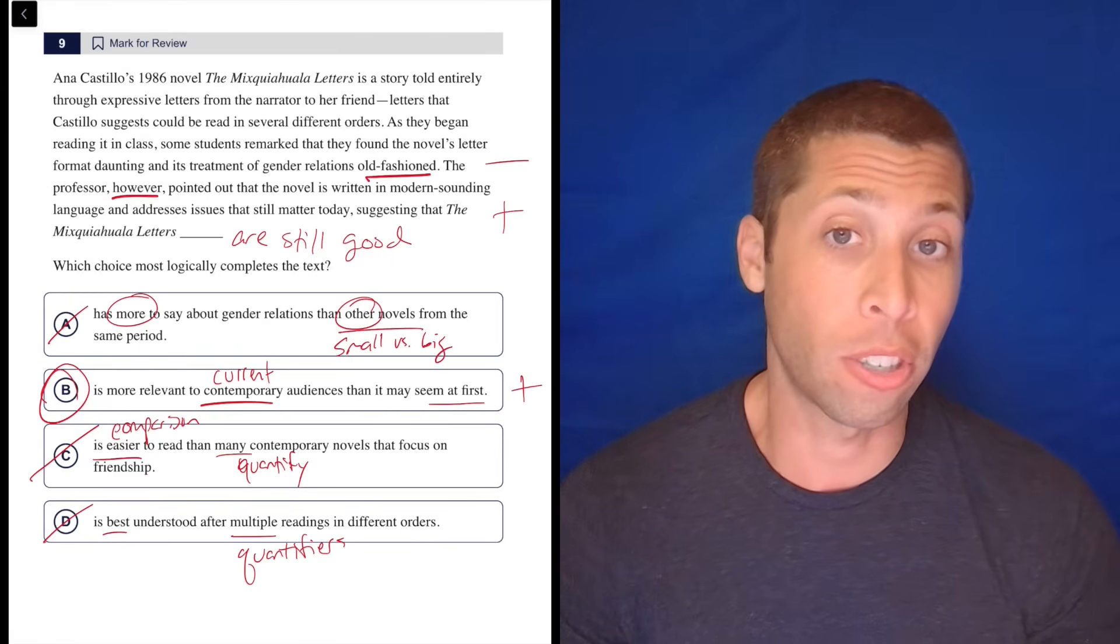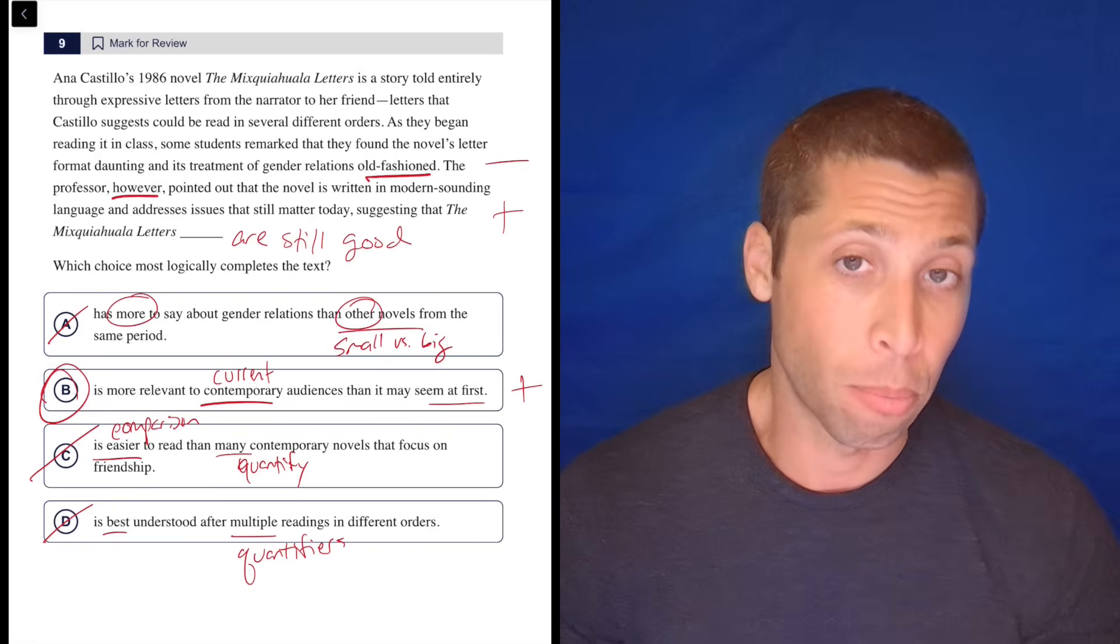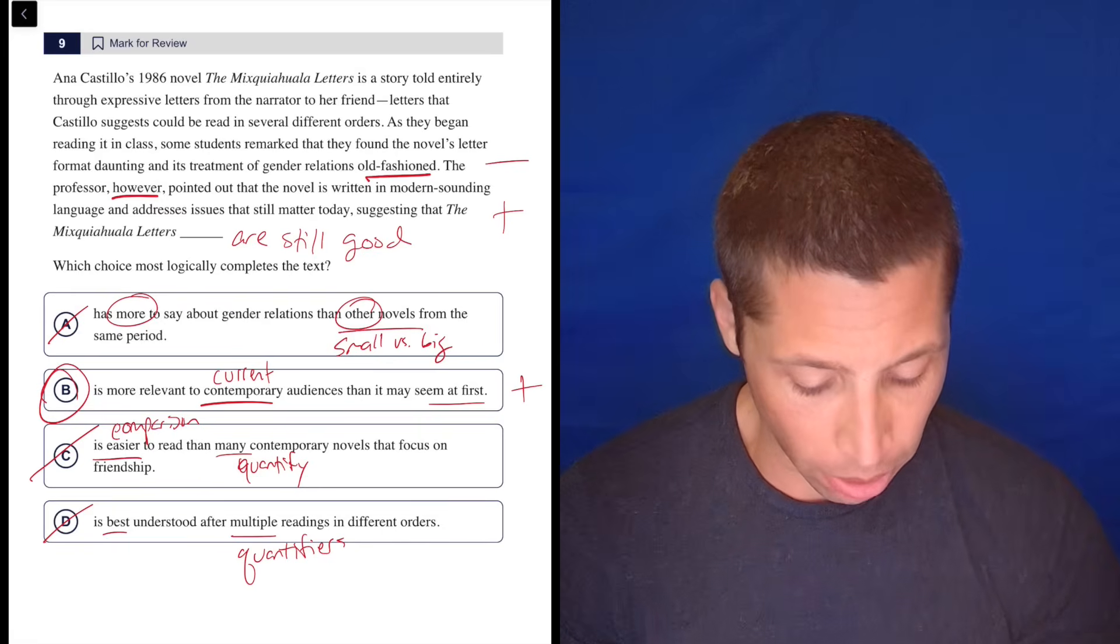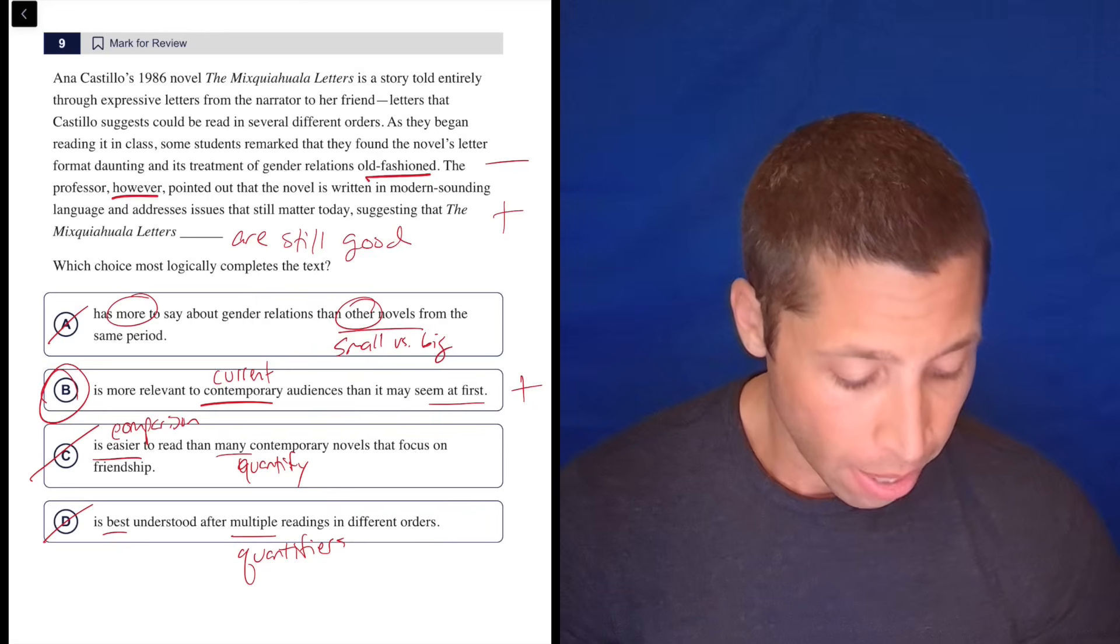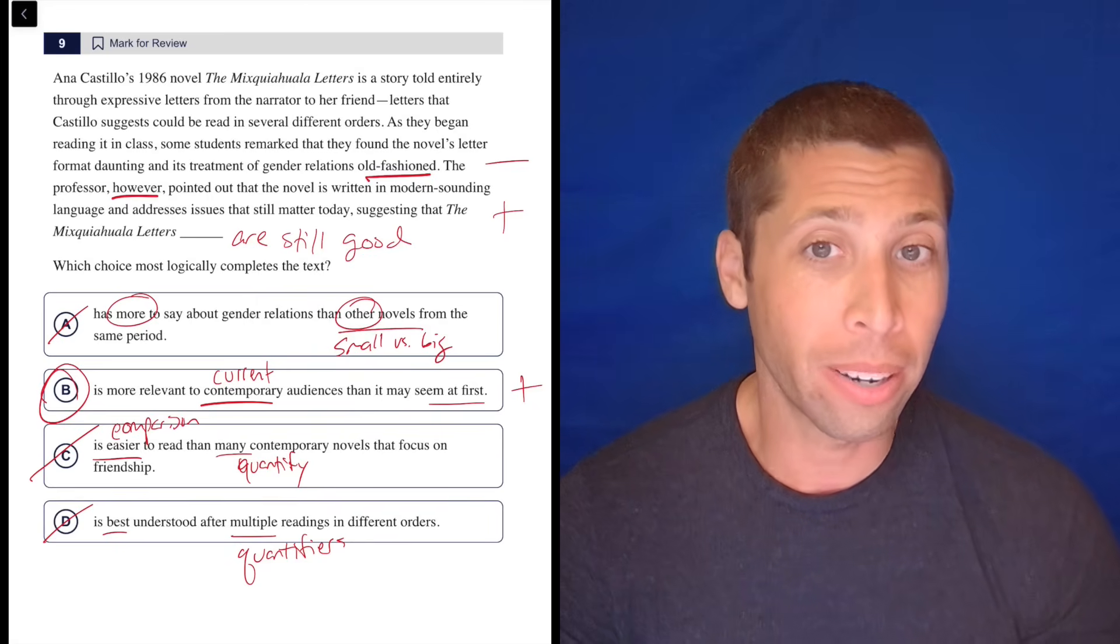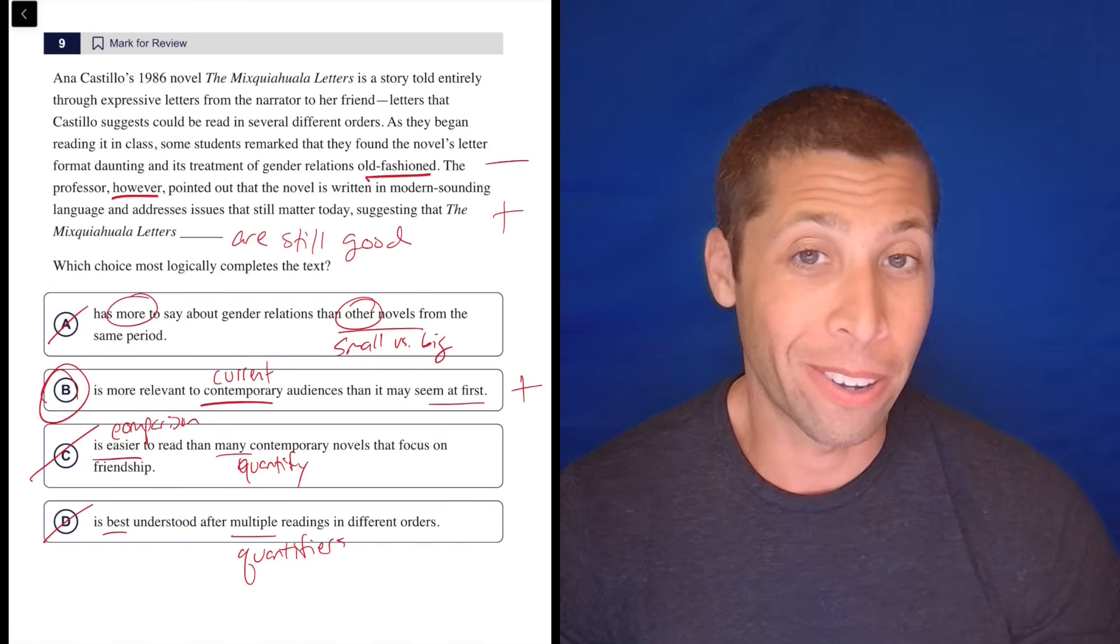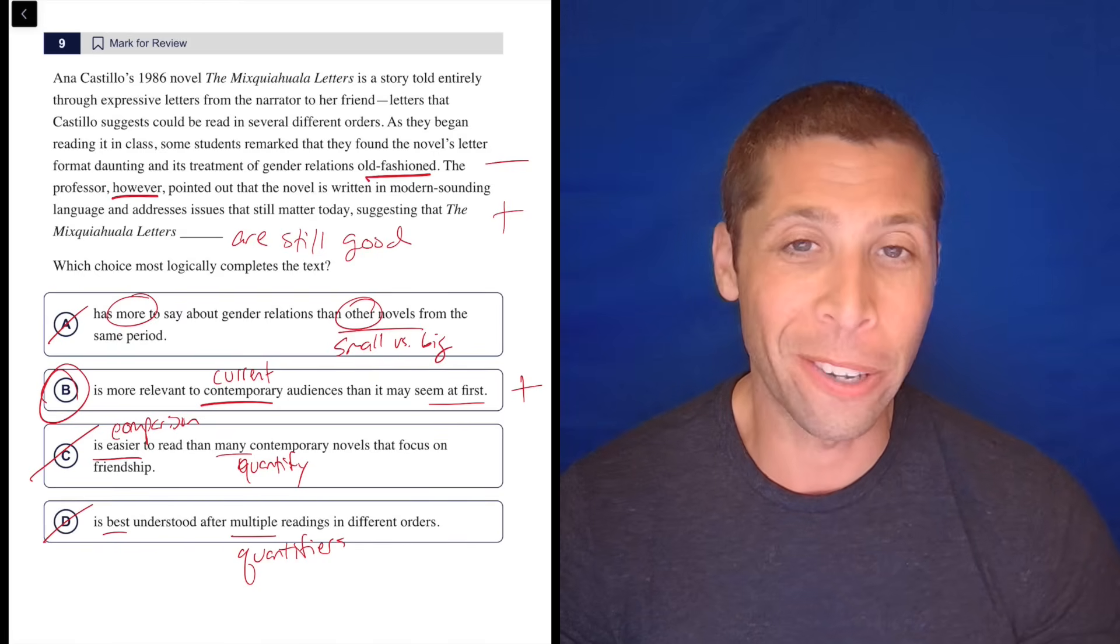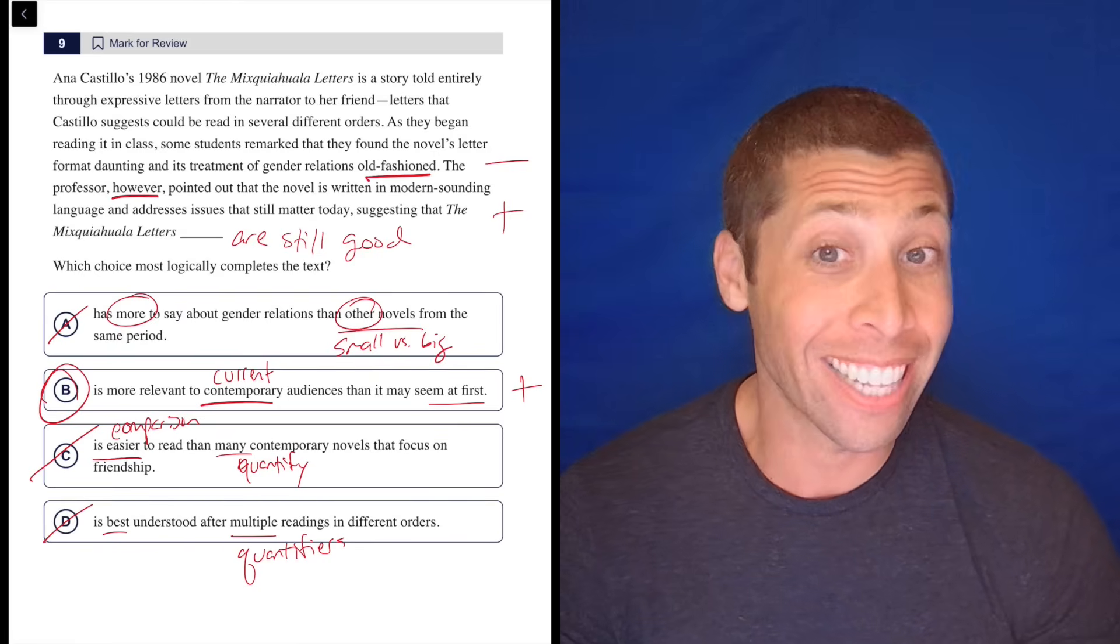And so choice B is really just disputing that and saying, actually, it's more relevant than you think. It's more current than you might seem at first. So that's a good word to know, contemporary. It's a classic kind of SAT word. It's not an unusual word. So hopefully you've seen it before and you kind of had a sense of what it means.